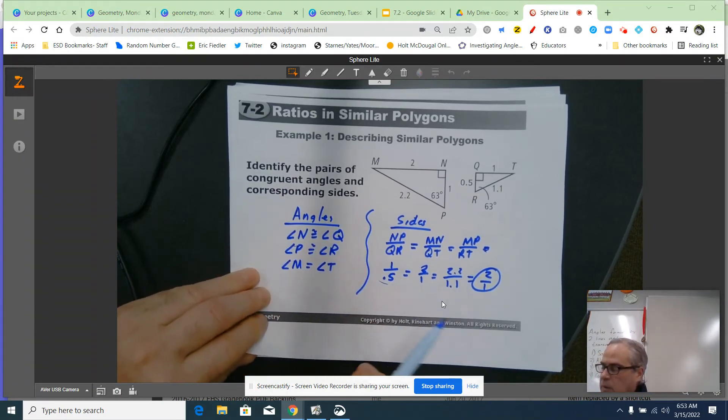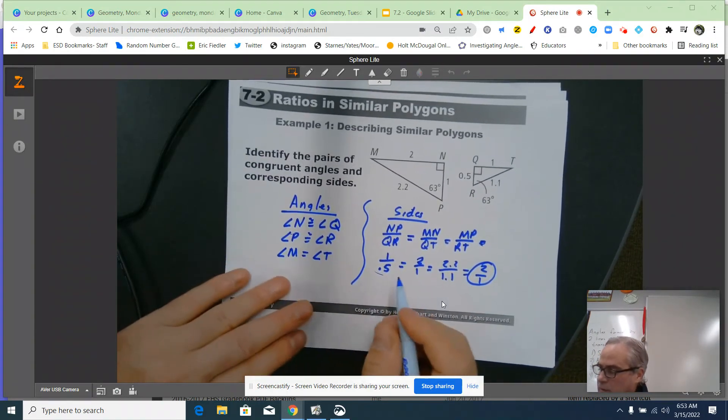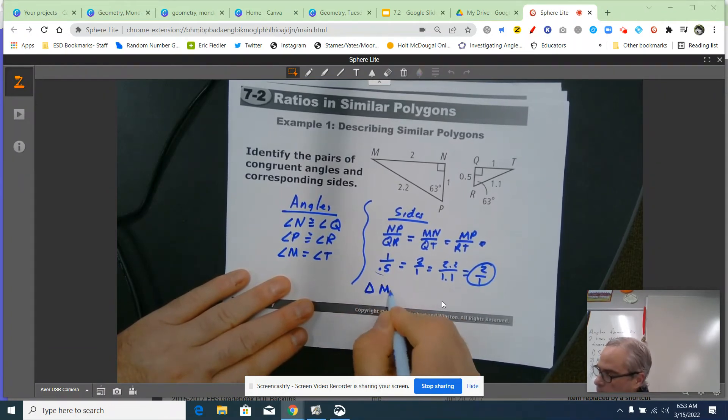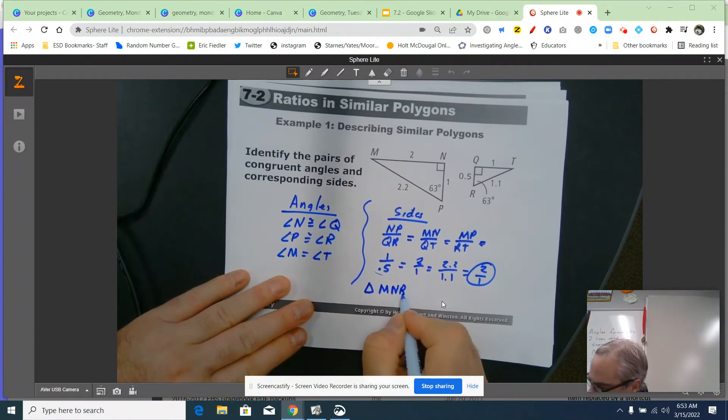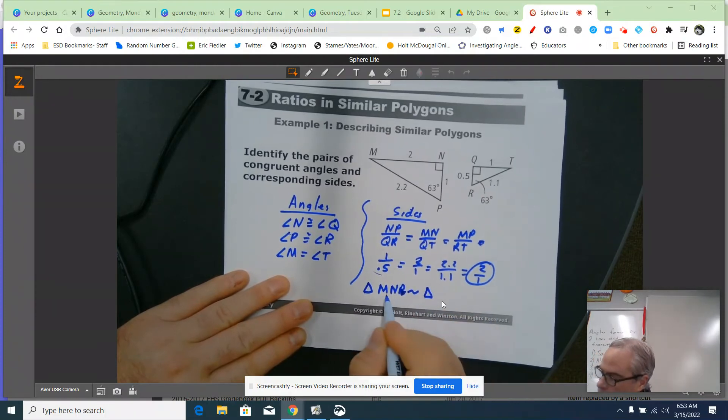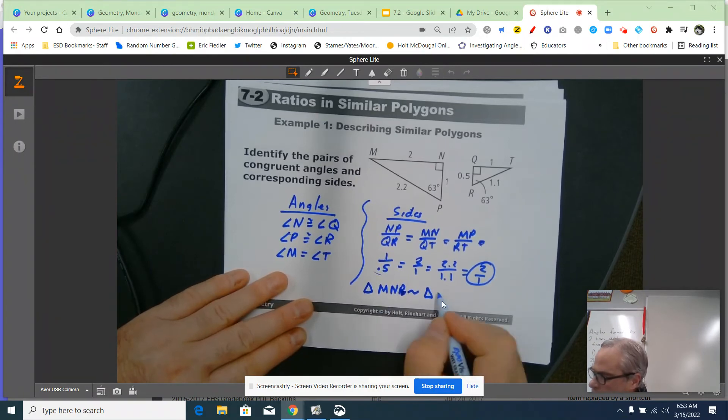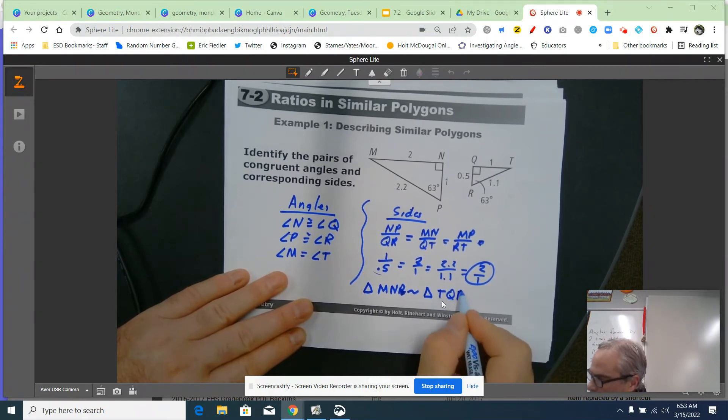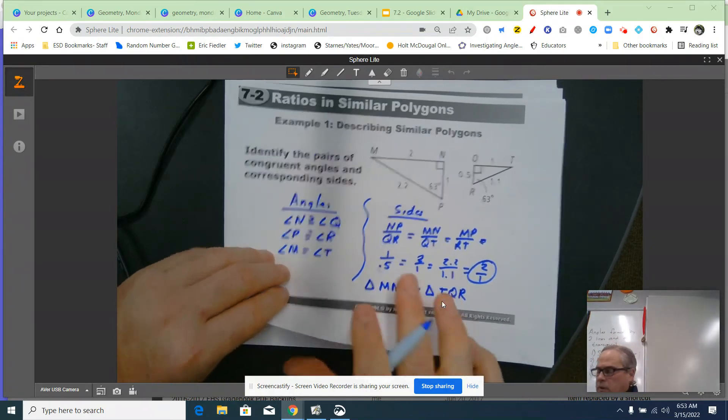It doesn't ask us to get a similarity statement. I could. I think I'll do this here. Triangle MNP, and here's that statement. Triangle MNP is similar to triangle, and I've got to make sure I've got the correct correspondences. T, and then Q, and then the last thing is R. And there's our similarity statement.